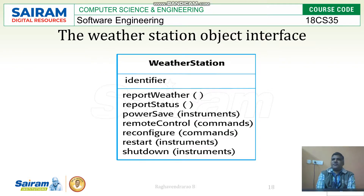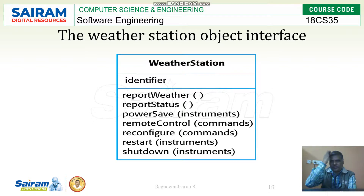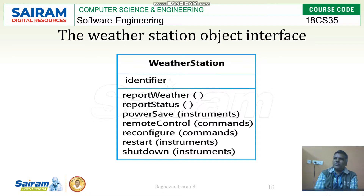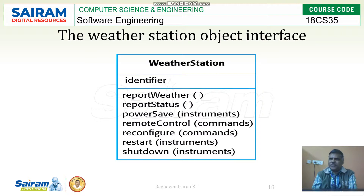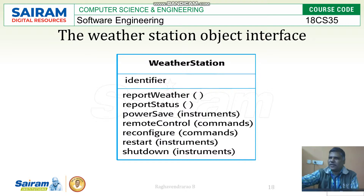Here is an example about the weather station object interfaces. The class is 'weather station' and there are some identifiers set, along with many functionalities: report weather, report status, and power saver. All these functionalities have to be tested for the identifier in that particular class.